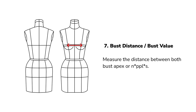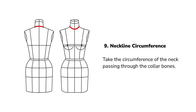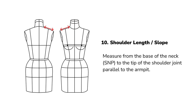Bust distance or bust value: measure the distance between both bust apexes or nipples. Bust point or bust length: measure from the shoulder neck point to the nipple or bust apex. Neckline circumference: measure the circumference of the neck, passing the tape measure through the collarbones.